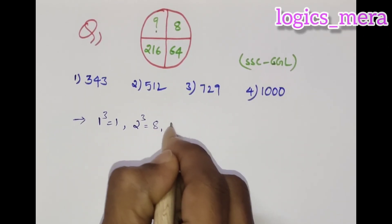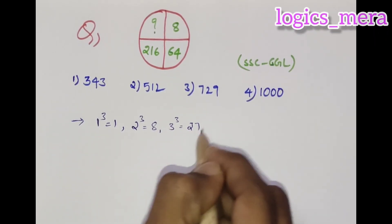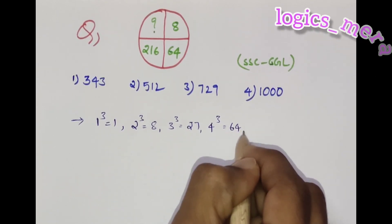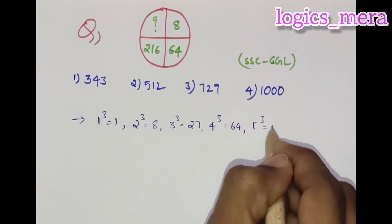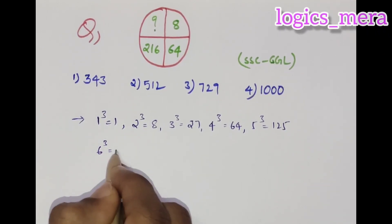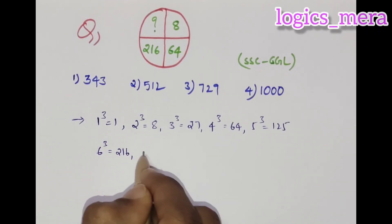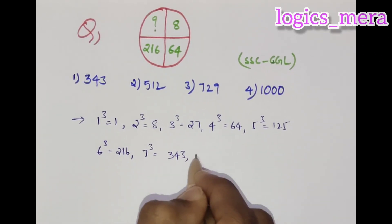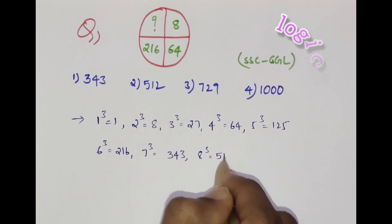Four cube is sixty-four, five cube is one hundred and twenty-five, six cube is two hundred and sixteen, seven cube is three hundred and forty-three, and eight cube is five hundred and twelve.